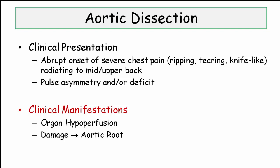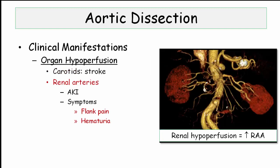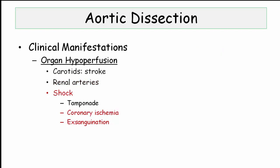Complications are organized into organ hypoperfusion and damage to the aortic root. In terms of organ hypoperfusion, any aortic branch can be impacted, but the big-ticket items are the carotids, manifested by stroke-like symptoms, and the renal arteries, presenting with acute kidney injury, flank pain, and probable hematuria — yet another condition associated with activation of the renin-angiotensin system. Coronary vessels can also dissect, presenting with MI, or the tear can find its way through the adventitia and the patient can exsanguinate, bleeding into the thorax or peritoneum.